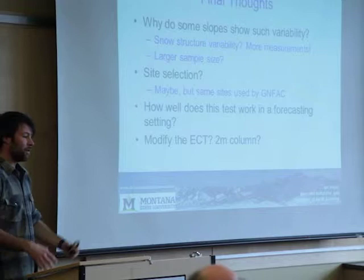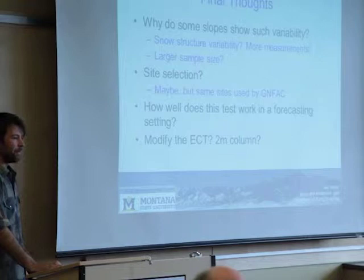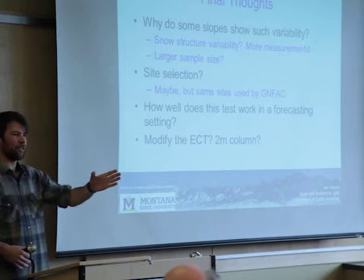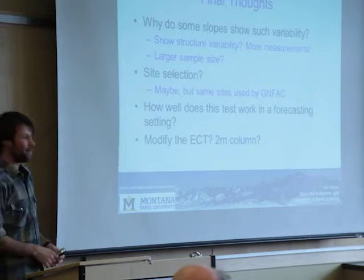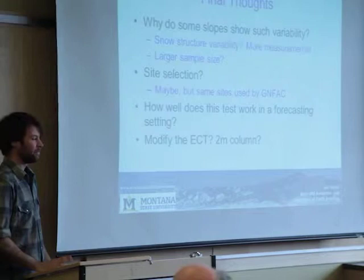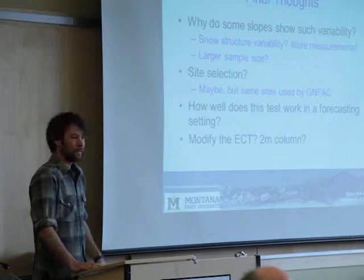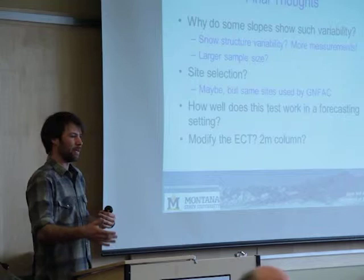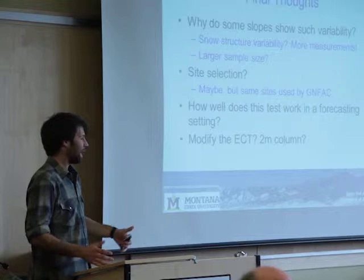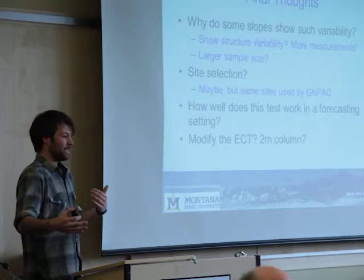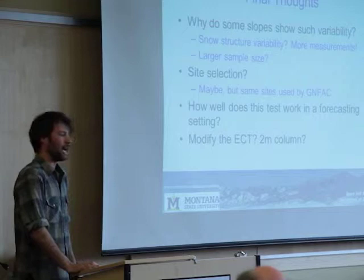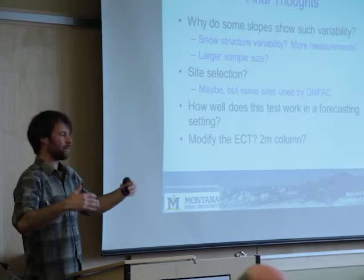I also looked at trying to get spatial patterns — do we have clusters or random spread when they're variable? But there was too much variability in my data. Some slopes had a line down the middle where one half propagated and one half didn't, but the frustrating ones were just buckshot — totally scattered. There was also talk about modifying the ECT. I was doing the standard one-meter ECT. Would two-meter ECTs be different? It seems like it would increase false stables but not help false unstables, and since we have problems at both ends of the spectrum, I'm not sure a two-meter column is going to solve anything.